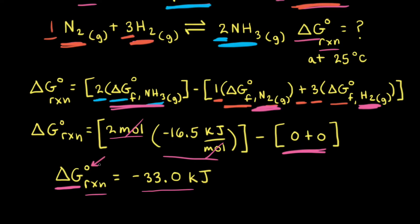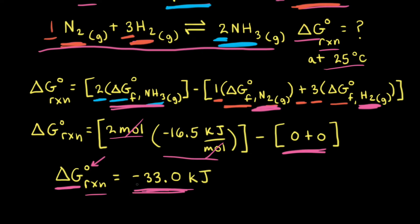Standard state for a gas refers to the pure gas at a pressure of one atmosphere. So if we think about all three of our gases at a partial pressure of one atmosphere at a temperature of 25 degrees Celsius, the standard change in free energy for this reaction is negative 33.0 kilojoules. Since the change in free energy is negative, that tells us the reaction is thermodynamically favorable in the forward direction, so nitrogen and hydrogen will react together to form more ammonia.